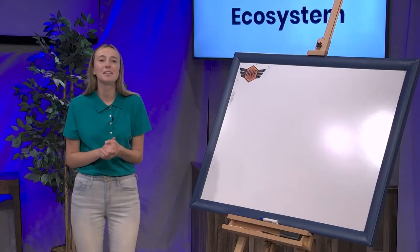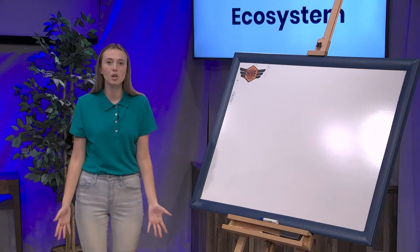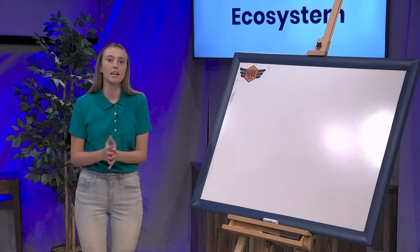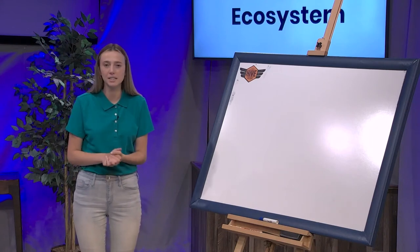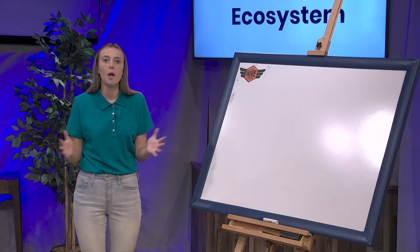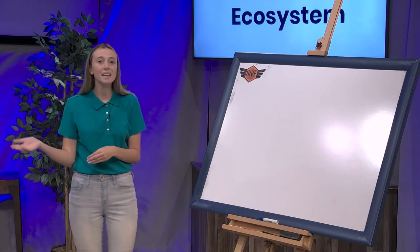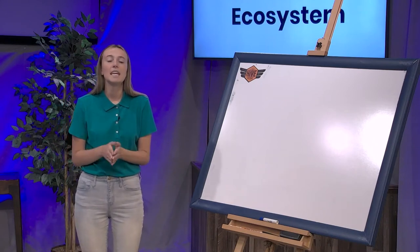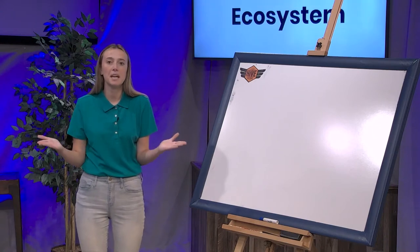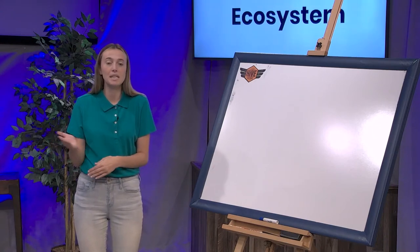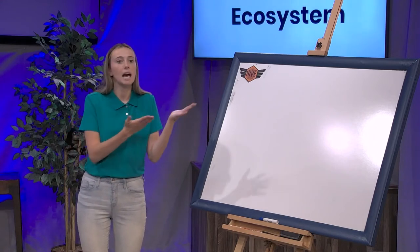I want to talk to you guys about the difference between biomes and ecosystems. Biomes are very broad. For example, a desert is a biome — there are lots of different deserts all over the world, and biomes talk about all of them. But ecosystems are more specific; they talk about a specific desert. For example, an ecosystem would be the Sahara Desert, while a biome would just be a desert.